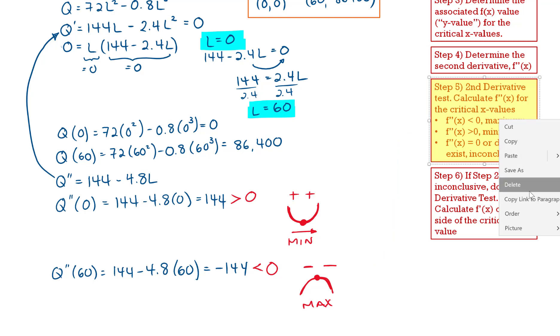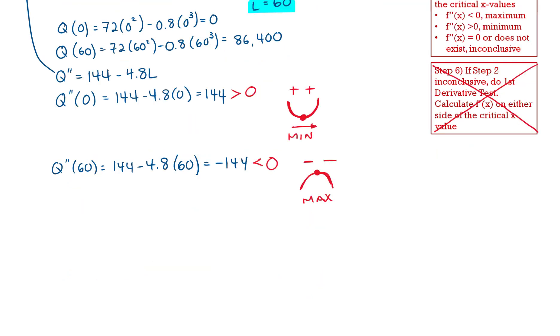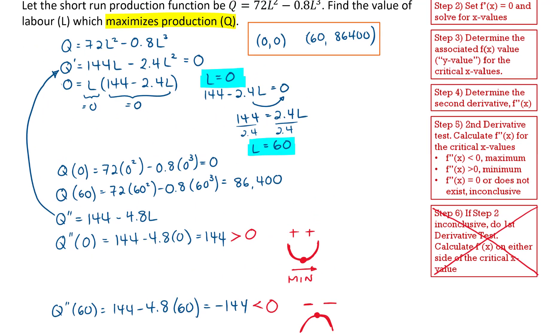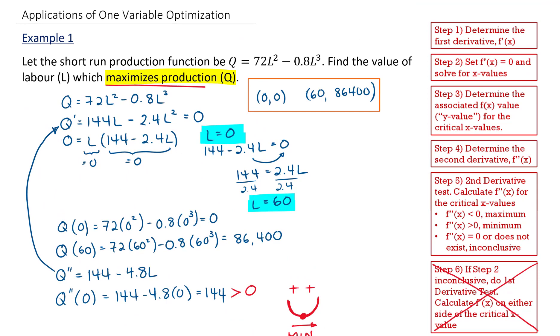So with our second derivative test being conclusive, we don't need to go on to step 6. We have determined our critical points. What we were interested in this problem is the maximum production.